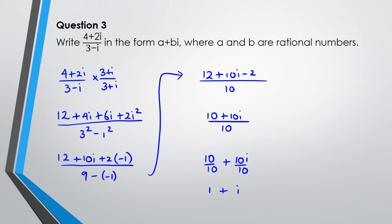We want the answer in a plus bi form, so we split it: 10 over 10 plus 10i over 10, giving a final answer of 1 plus i. In my class a student cancelled the 10s incorrectly and wrote it as 10 plus i — that is incorrect. Make sure you divide each term separately.